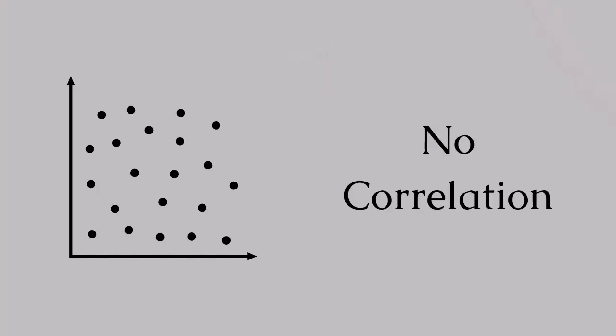No correlation: two variables move completely independently of each other. Consider the number of chairs in a room and the stock market — they aren't related. No matter how many chairs I add to my dining room, my 401k will continue to be unaffected.